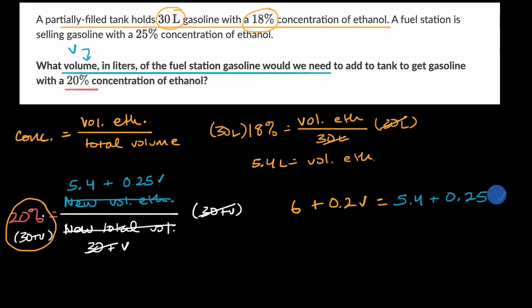And now let's see, my V coefficient is larger on the right, so what I could do is try to subtract the 0.2V from both sides, so I isolate the V's on the right. So let me do that. So minus 0.2V, minus 0.2V. And then, actually I'll just do one step at a time. So that's going to get me, on the left-hand side, 6 is equal to 5.4 plus, if I subtract here, this is 0.05V.